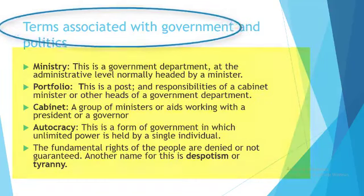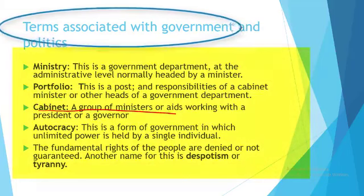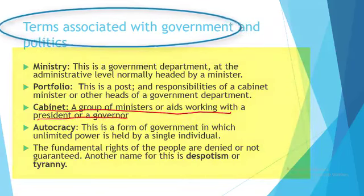Then we have portfolio, which simply means your position or post to occupy. Then we have the cabinet, which refers to the persons that work alongside the governor or president. Those that work with the governor are called commissioners, while those that work with the president are called ministers.